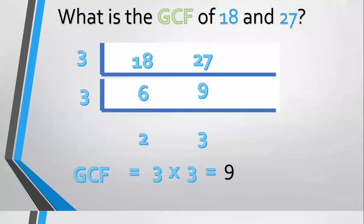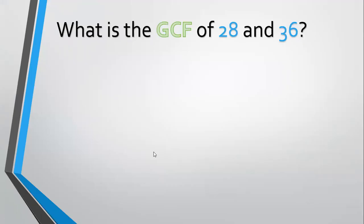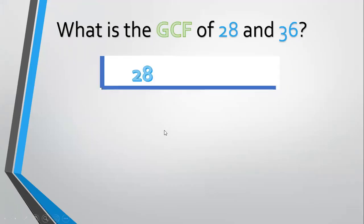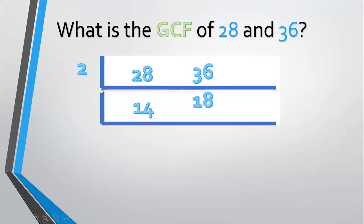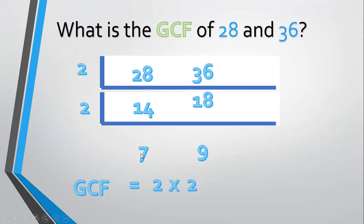Another example, what is the GCF of 28 and 36? Align 28 and 36. The prime common factor is 2, so divide. 28 divided by 2 equals 14. 36 divided by 2 equals 18. Divide again by 2. 14 divided by 2 equals 7. 18 divided by 2 equals 9. 7 and 9 have no prime common factor. So get the GCF by multiplying 2 times 2 equals 4. The GCF is equal to 4.